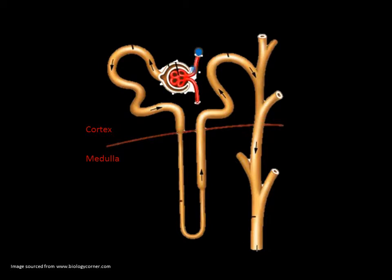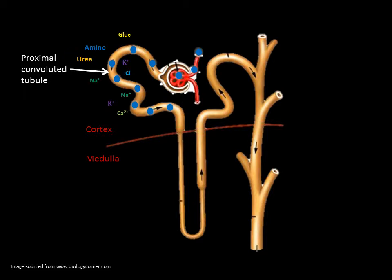Filtrate moves from the Bowman's capsule into the proximal convoluted tubule where almost complete reabsorption of water and nutritionally important solutes back into the capillaries occurs. 100% of glucose and amino acids, 50% of urea, and variable amounts of ions such as sodium, potassium, calcium and chloride generally reabsorb here also. The most important of these is the sodium. Nutrients such as glucose and vitamins piggyback on sodium symporters which transport the solutes across the membranes.